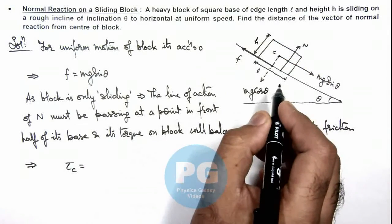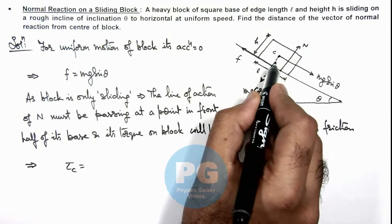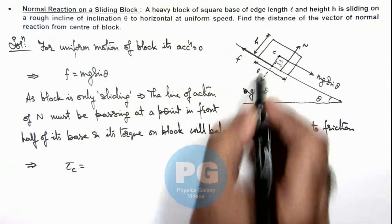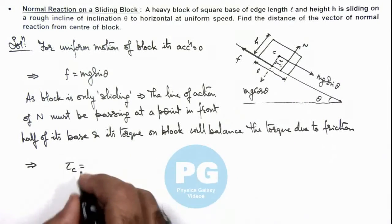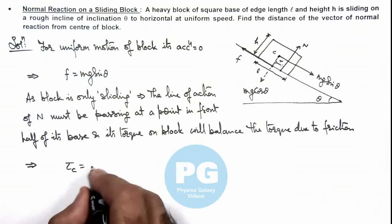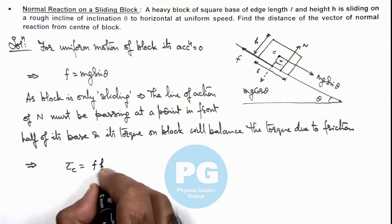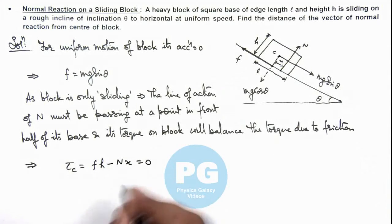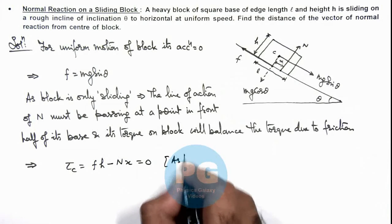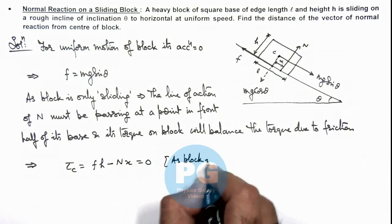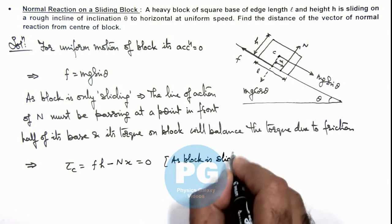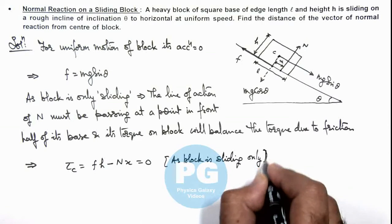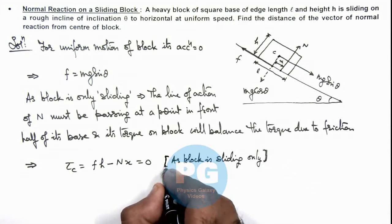And if we consider the vector of normal reaction is passing at a distance x from the center, then we can write torque about center will be friction multiplied by h minus N multiplied by x, and it should be zero. As block is sliding only, it is not toppling.